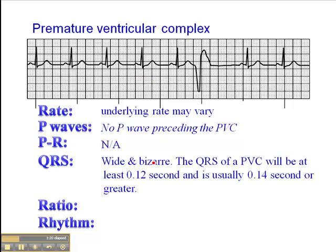The QRS is wide and bizarre, and that's key. The QRS has to be at least 0.12 second or greater. The QRS of a PVC will be at least 0.12, but it's usually 0.14 second or greater. The beginning of the QRS starts about here and the end is roughly there — this is probably the T wave, or the ventricular repolarization phase. Just by looking at it, we can see this is a wide QRS, so there's probably no great need to measure it in detail.